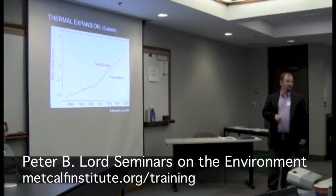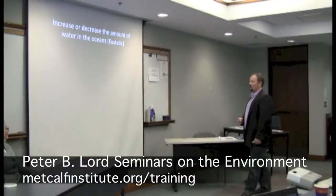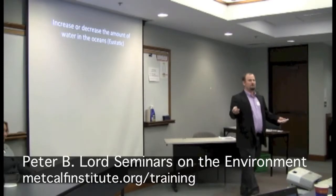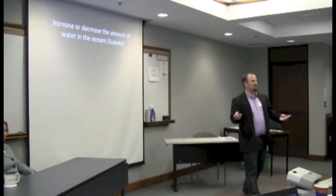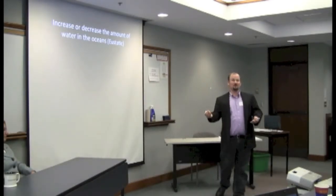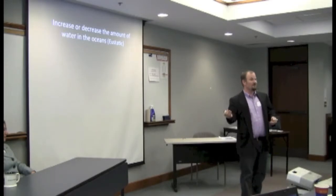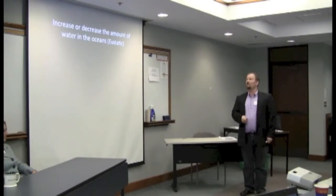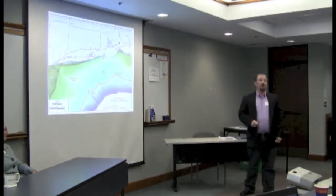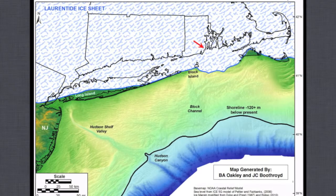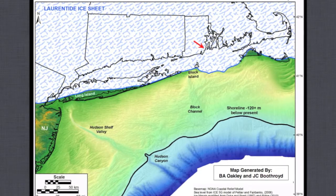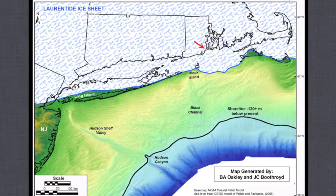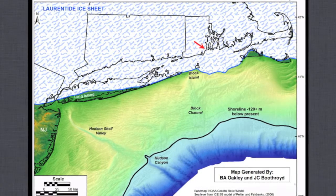We also have to add water to the ocean, or decrease it in the geologic past. How do we do that? Mountain glaciers—you melt ice. We're particularly focusing on ice sheets, but mountain glaciers play a role as well. In the past, 26,000 years ago, you were at that red arrow. The Laurentide ice sheet extended across Long Island, over Block Island, Martha's Vineyard, Nantucket, and into the Gulf of Maine.